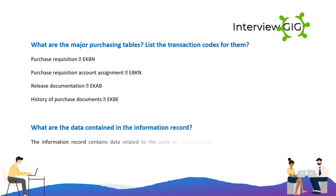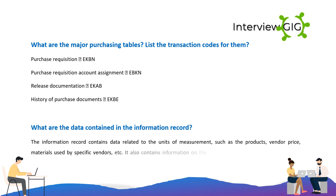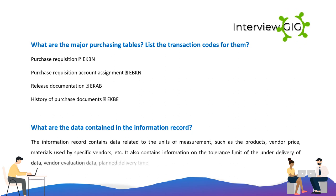What data is contained in the information record? The information record contains data related to units of measurement, such as products, vendor price, materials used by specific vendors, etc. It also contains information on the tolerance limit of under-delivery of data, vendor evaluation data, planned delivery time, and availability status for goods.